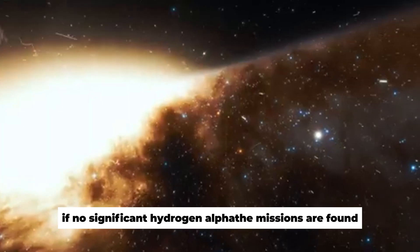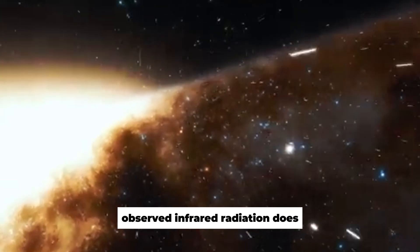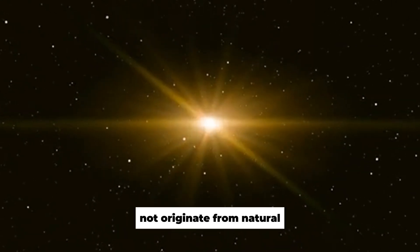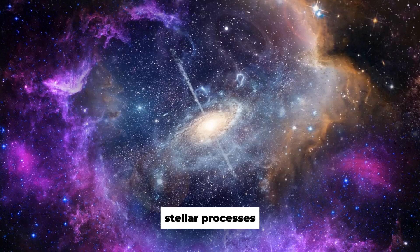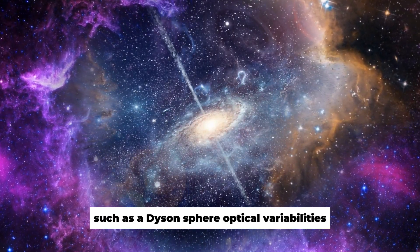These emissions are typical for star-forming regions or active stars. The values help in the search for Dyson spheres. If no significant hydrogen-alpha emissions are found, this may indicate that the observed infrared radiation does not originate from natural stellar processes, but possibly from an artificial structure such as a Dyson sphere.